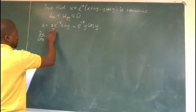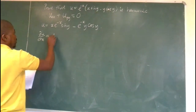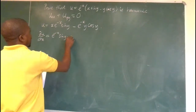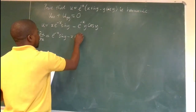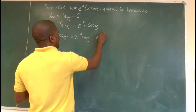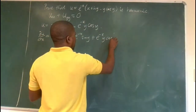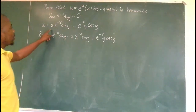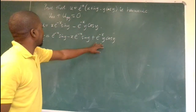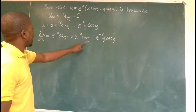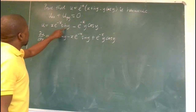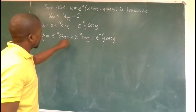Since sine y is a constant, we differentiate using the product rule uv. We end up with e to the minus x sine y, minus x e to the minus x sine y, minus e to the power minus x times y cos y. Here, sine y is a constant, so we apply the product rule: v times du plus u times dv, giving minus x e to that.